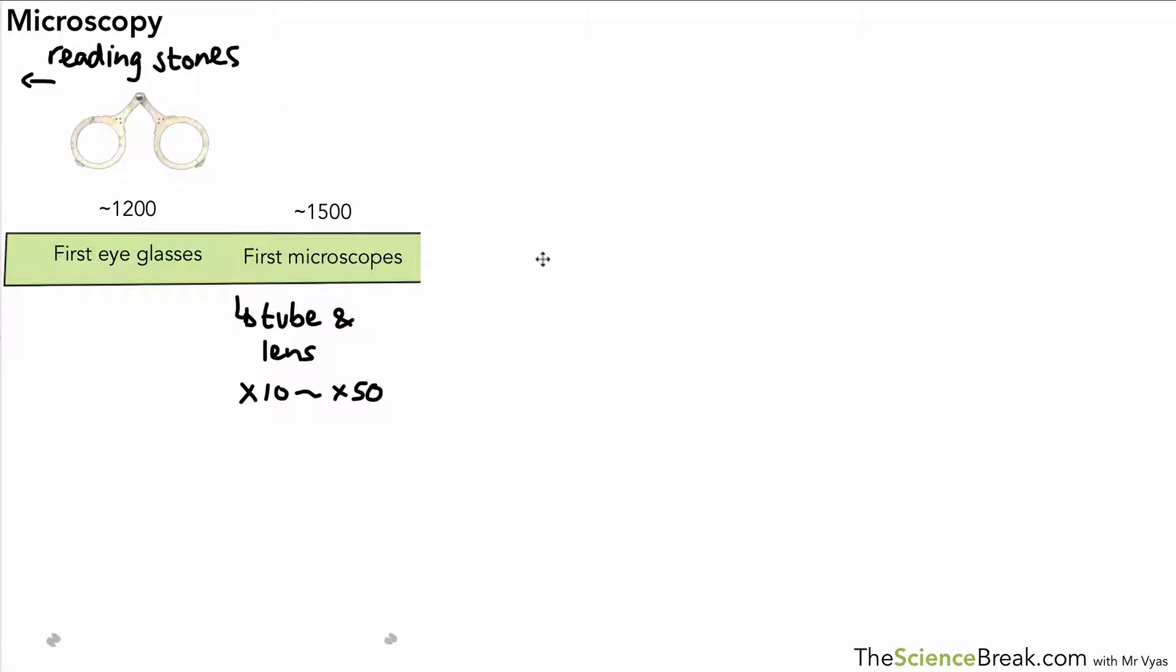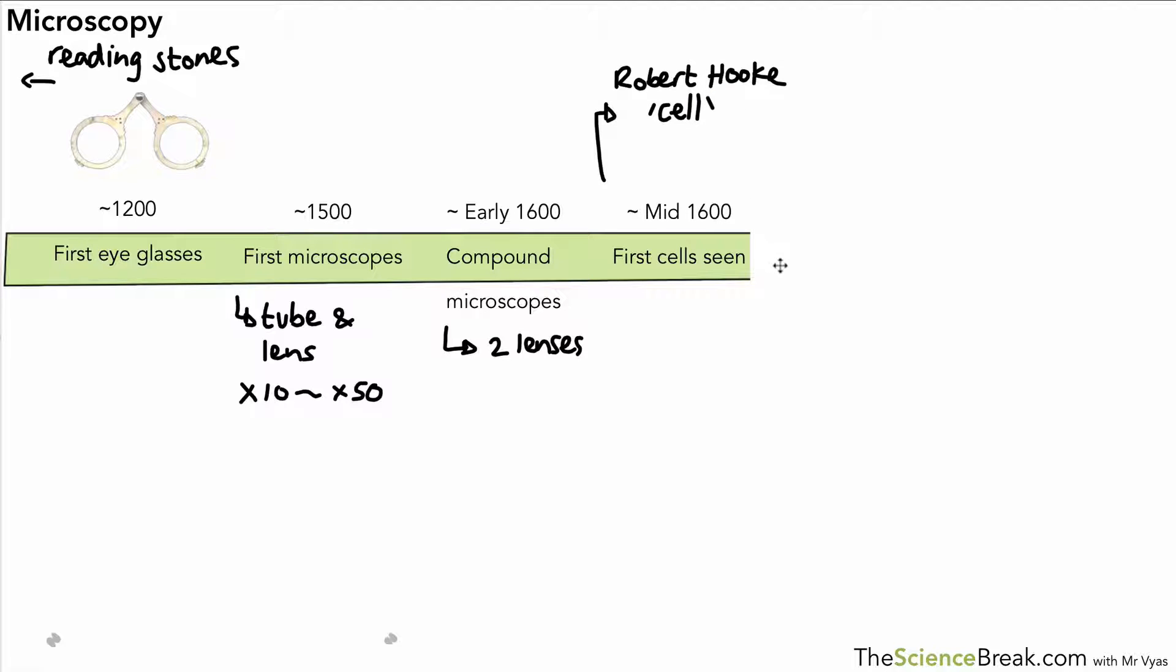About a hundred years later we had the development of what's called a compound microscope which was made of two lenses and that increased the magnification further. That allowed us in the mid-1600s to see cells for the first time, and the first person recorded as seeing cells was a scientist called Robert Hooke. He was the actual person that used the word cell to describe what he saw. It was actually in cork.